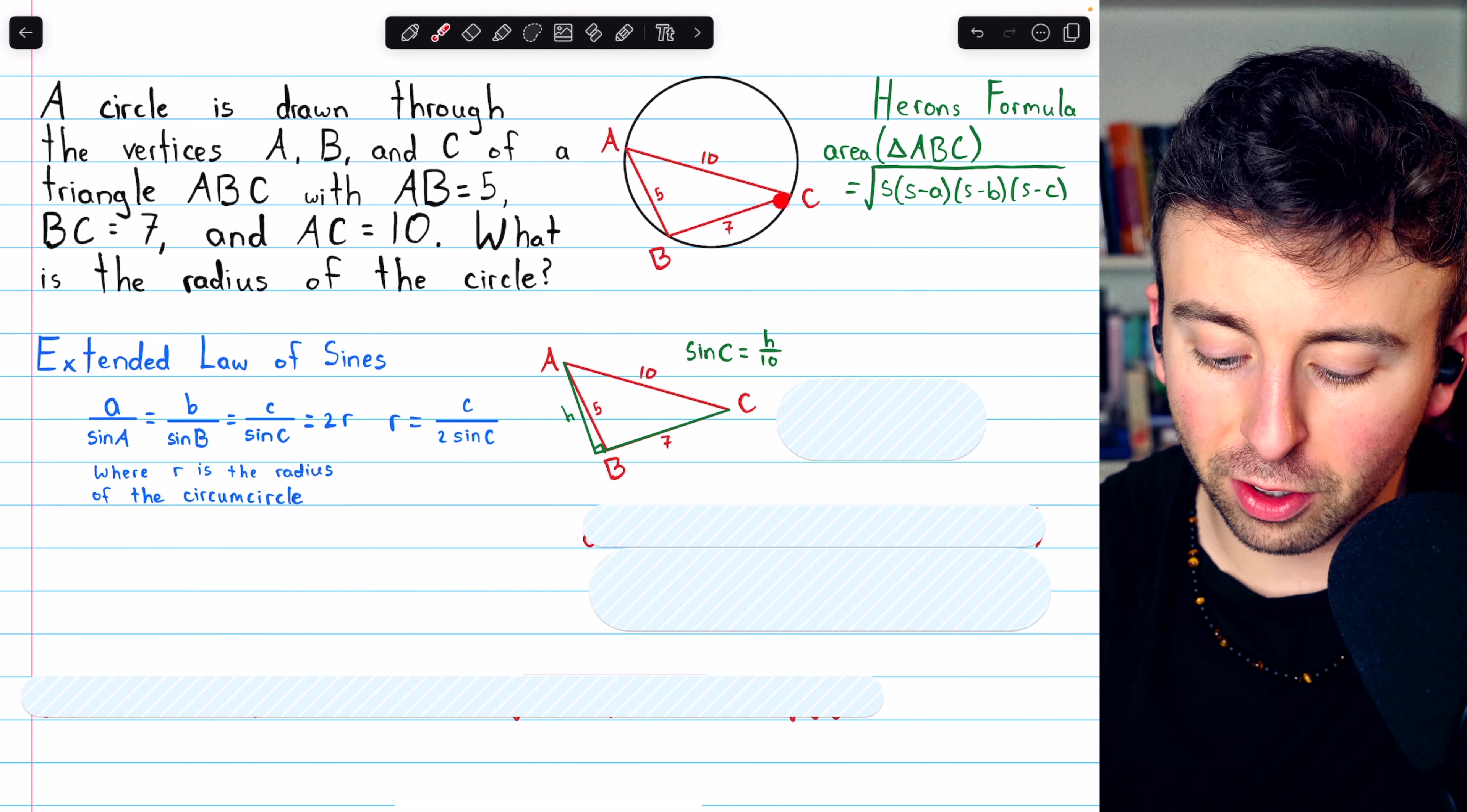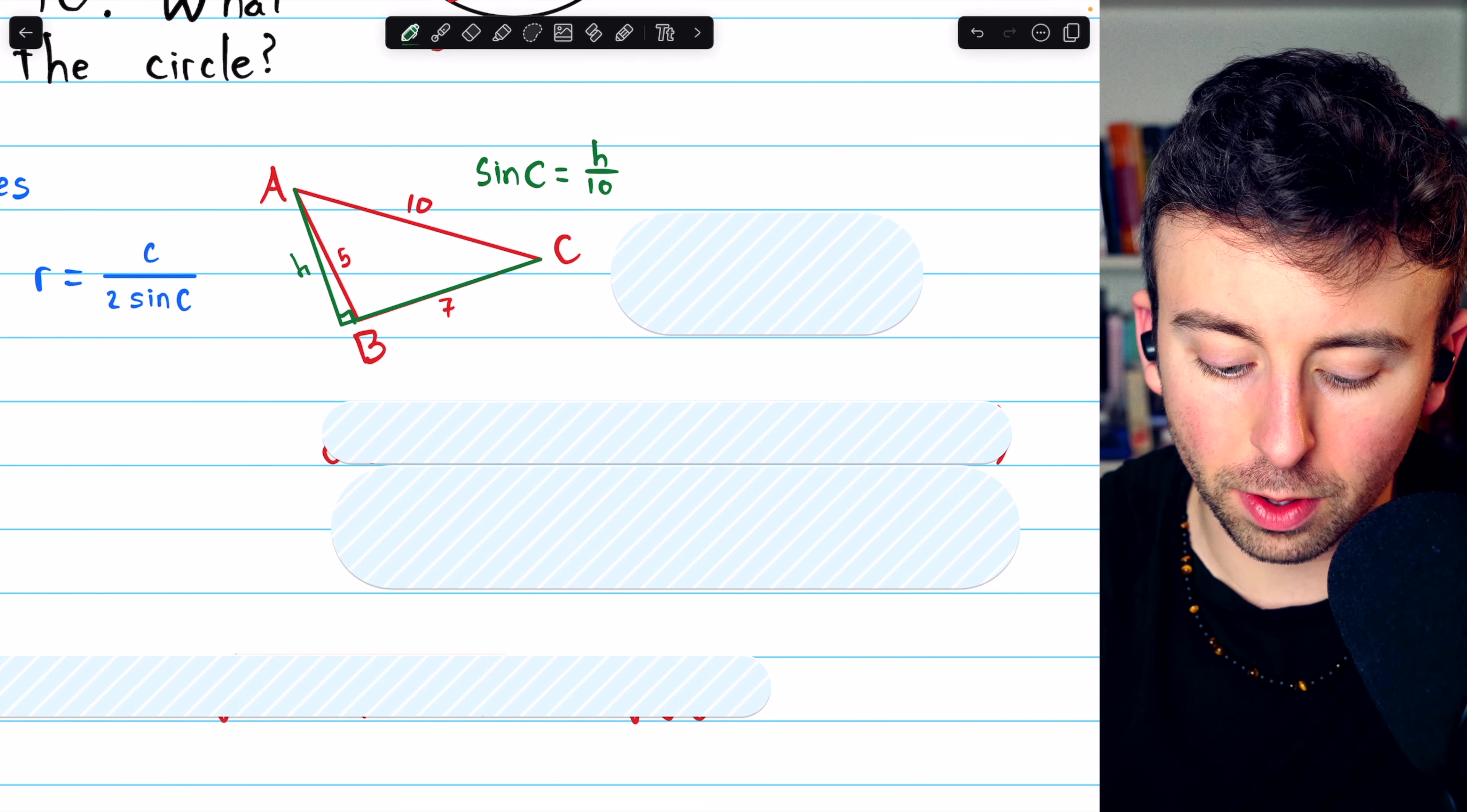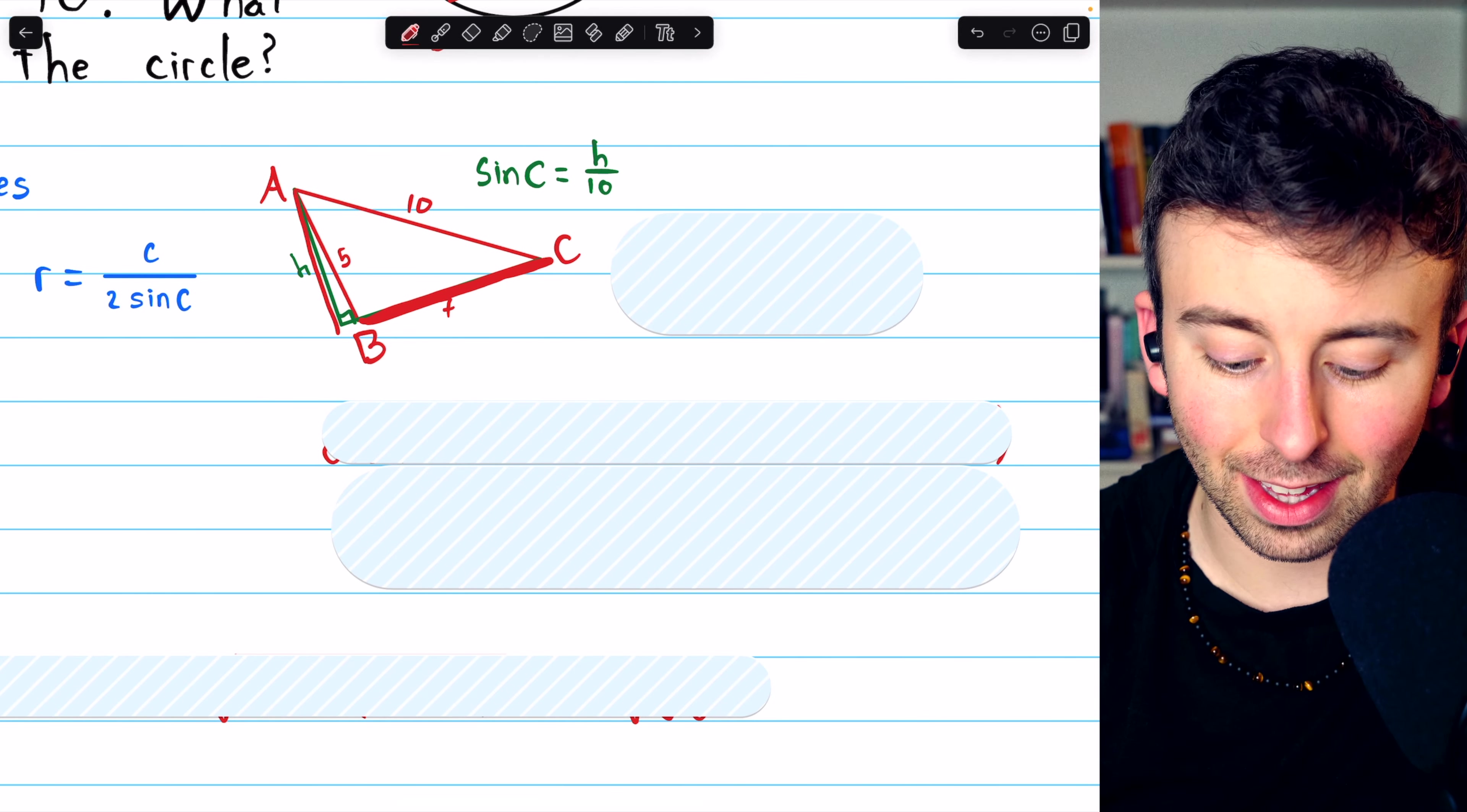Here is our triangle that I've just taken out of the circle and duplicated here so we can look at it with more detail. The height of this triangle, if we consider this side here to be the base, then this perpendicular distance to the opposite vertex is the height.